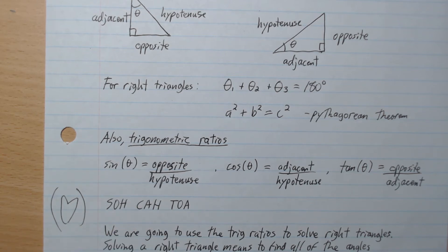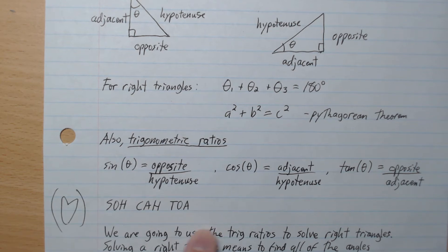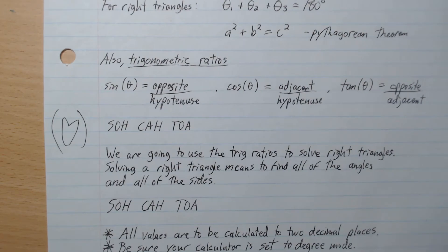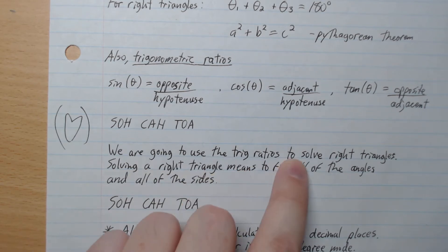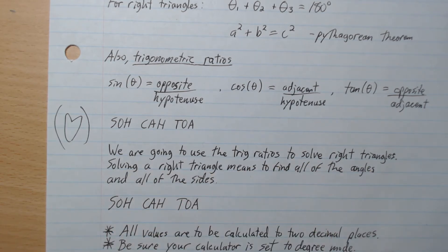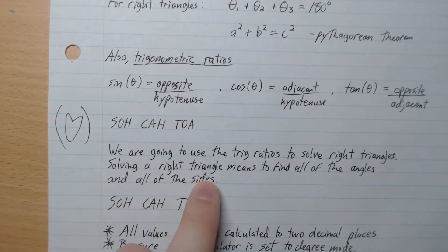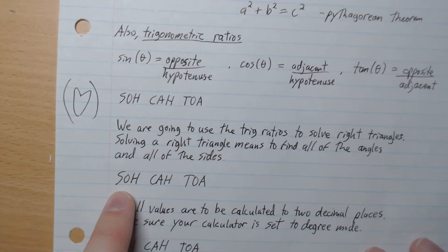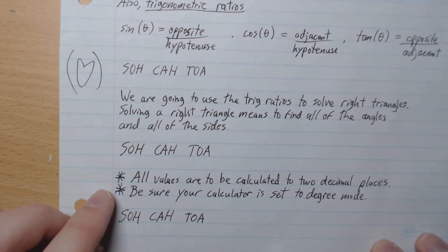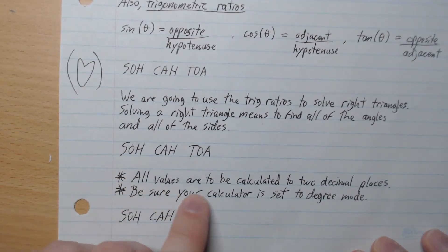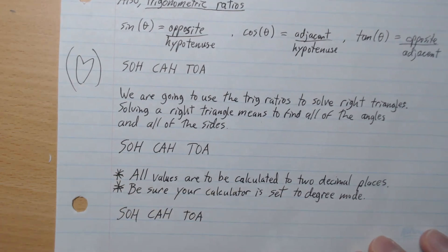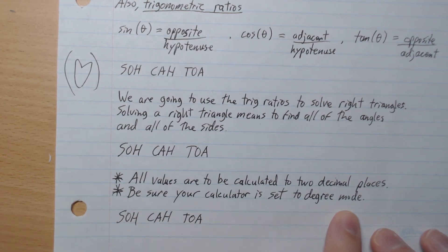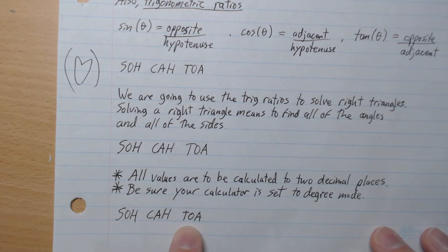We're going to do a lot of practice today, and by the end of this lesson you're going to know SOHCAHTOA that well. We're going to use the trig ratios to solve right triangles. Solving a right triangle means to find all of the angles and all of the sides. A couple of comments: all values are to be calculated to two decimal places, and be sure your calculator is set to degree mode.